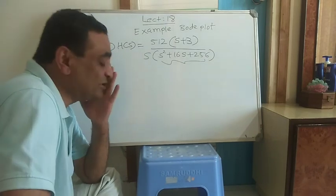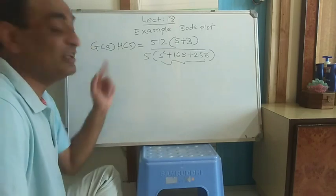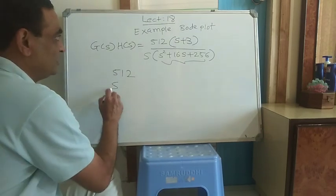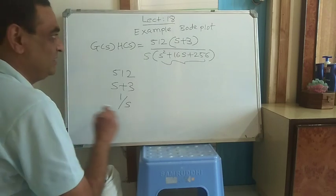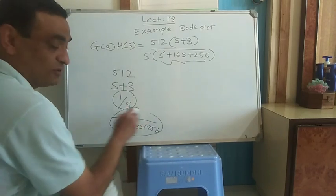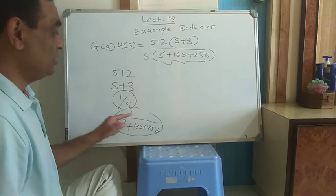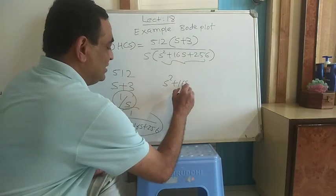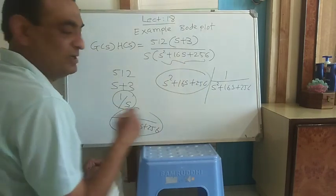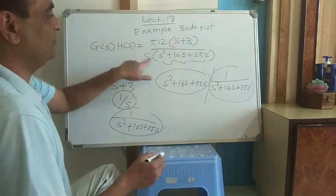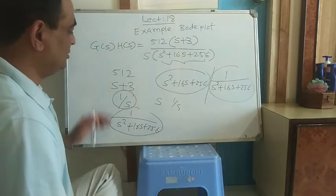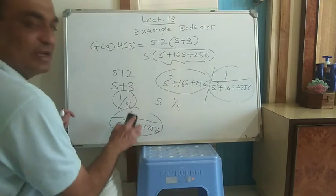In the assignments, almost all students made a mistake in writing the terms. There are four terms: 512, (s+3), 1/s, and 1/(s²+16s+256). You have to write 1/s — not just s — and 1/(s²+16s+256). Don't write s²+16s+256 alone; there is a difference between a numerator term and a denominator term. Unless s is in the numerator, it is a 1/s term. Almost everybody made this mistake in the assignment.